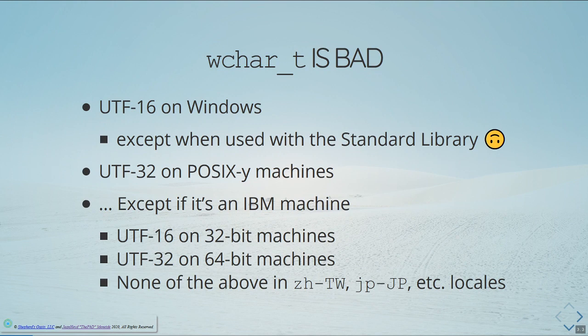We also know that wchar_t is bad and it's a real dead end. It's UTF-16 on Windows, except when you use it with the standard library, in which case it will cut your surrogate pairs in half or ignore them entirely. You end up with what's closer to something like the 1990s UCS-2, where 16 bits was the maximum number of characters. On POSIX machines you get UTF-32, which is nice, except if it's an IBM machine. Then you get UTF-16 on a 32-bit machine, UTF-32 on 64-bit machines, and none of the above if you're on a Chinese or Japanese-based locale on any of those machines. So that's incredibly unfortunate — it's just the way the cookie crumbles here.